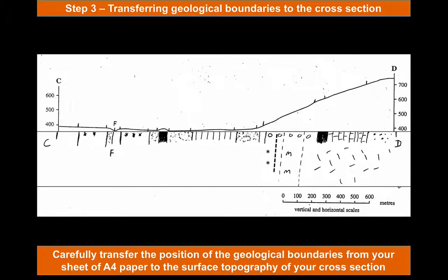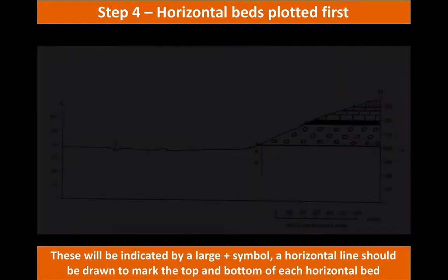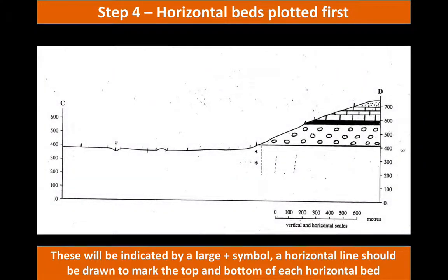We're now in a position to start drawing our cross-section, but we need to break it down a little bit. Our next step is to mark on any horizontal or gently dipping beds — usually beds above unconformities. Have a go at this: you know where the horizontal beds are, so mark them on and draw those beds underground horizontally. This is what your cross-section should now look like, with those horizontal beds marked above the unconformity.